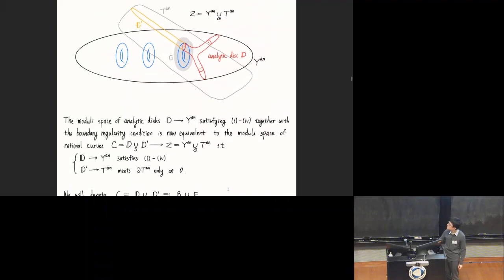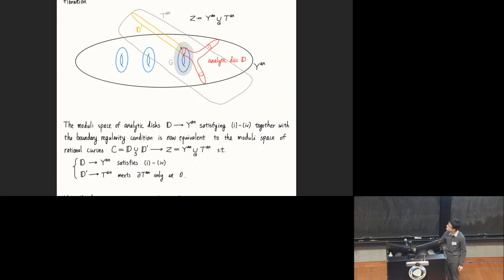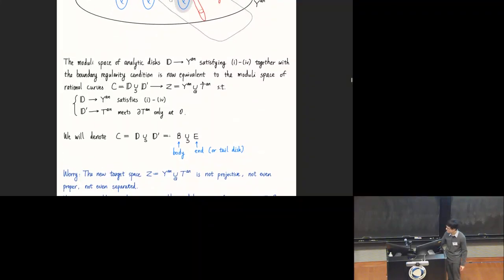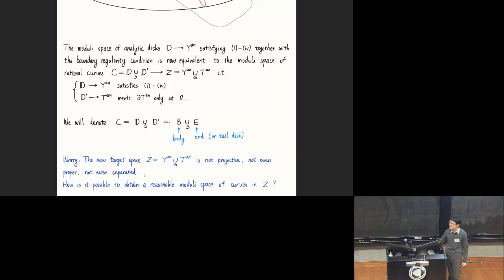Here we have a big worry: we had our log-Calabi-Yau Y, and then we have some gray toric variety that has very little to do with the log-Calabi-Yau except along this gray area. So we artificially glue them together—whether it makes sense is not even clear at first sight. Furthermore, such a glued space is not projective, it can't be projective when you glue something along this kind of open domain, and it's not even proper and not even separated. So the worry is: how is it possible to ever count curves in such a strange glued space, or to obtain even a reasonable moduli space of curves?